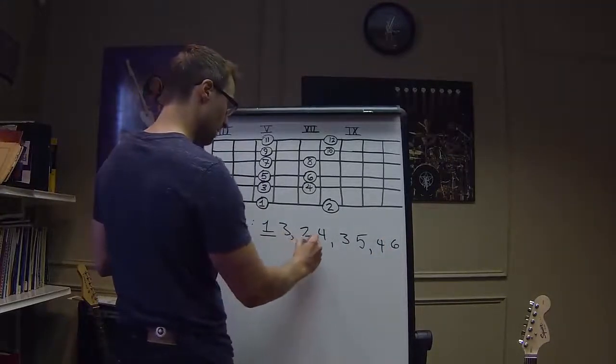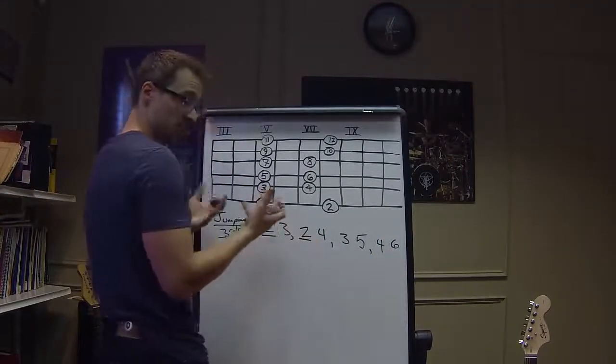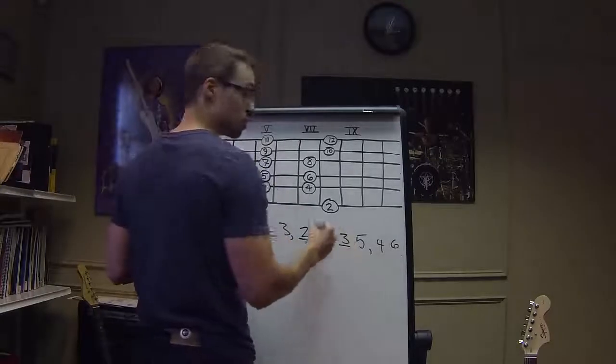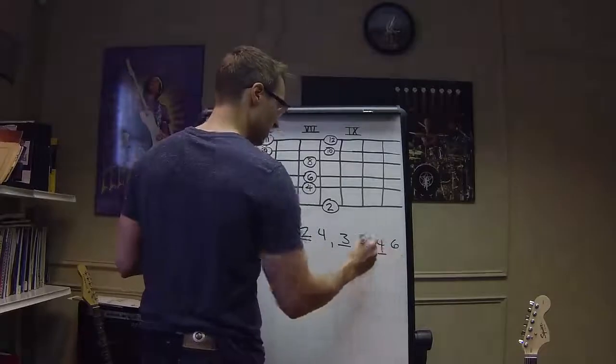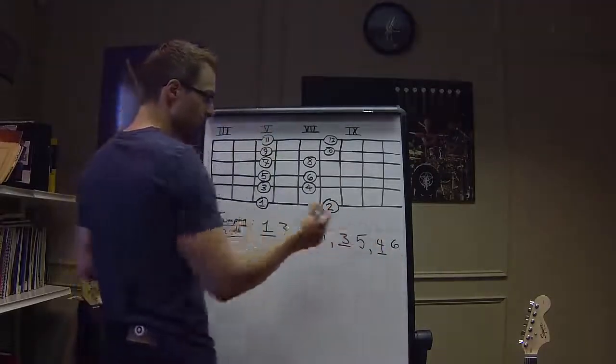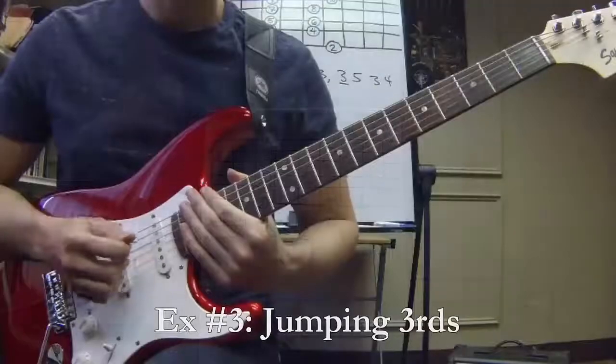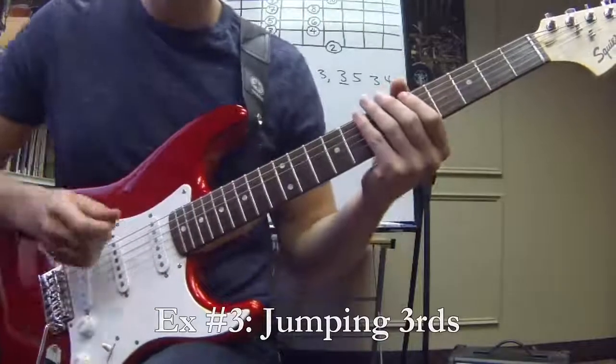Once again, if we look at the beginning of every group, in this case, there's 2 notes per group, because it's a smaller theme or subject that's being repeated. 1, 2, 3, 4. Minor pentatonic scale jumping third sequence.